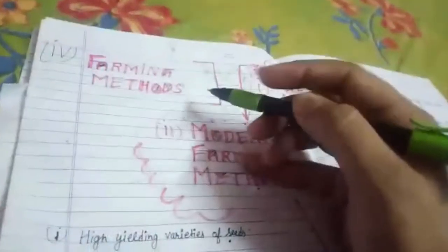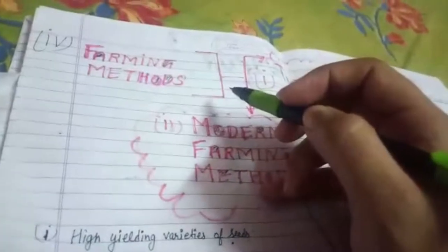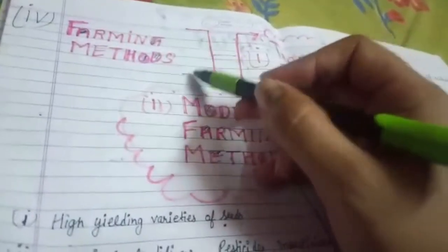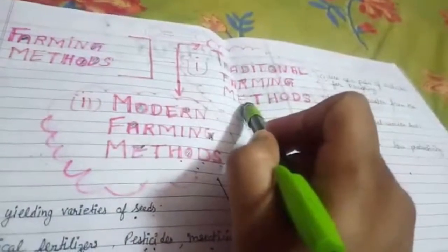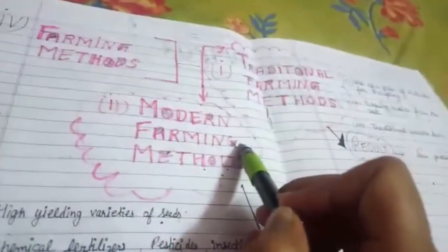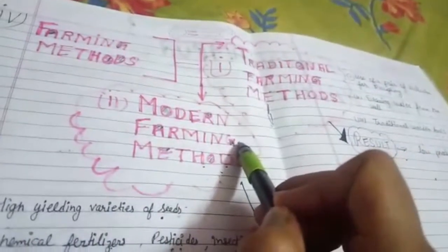The fourth point is modern farming methods. This is further divided into two parts: the first one is traditional farming method and the second one is modern farming method.